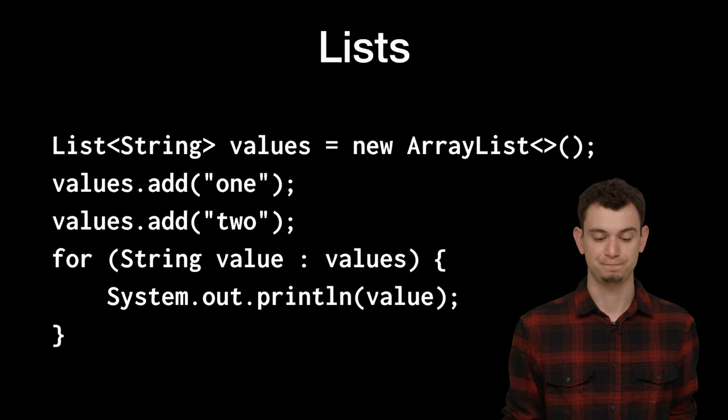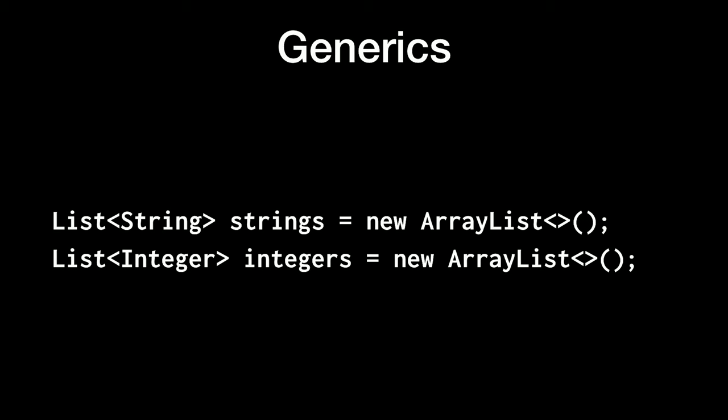Using that angle bracket notation, you're specifying the type contained within the list — in Java this is called a generic. It's basically a way for one class to understand something about what's inside of it, so you can pass a type to some other type. For example, to create a list of integers, rather than saying capital String, you'd just say capital Integer, and you can add integers to that list in the same way.